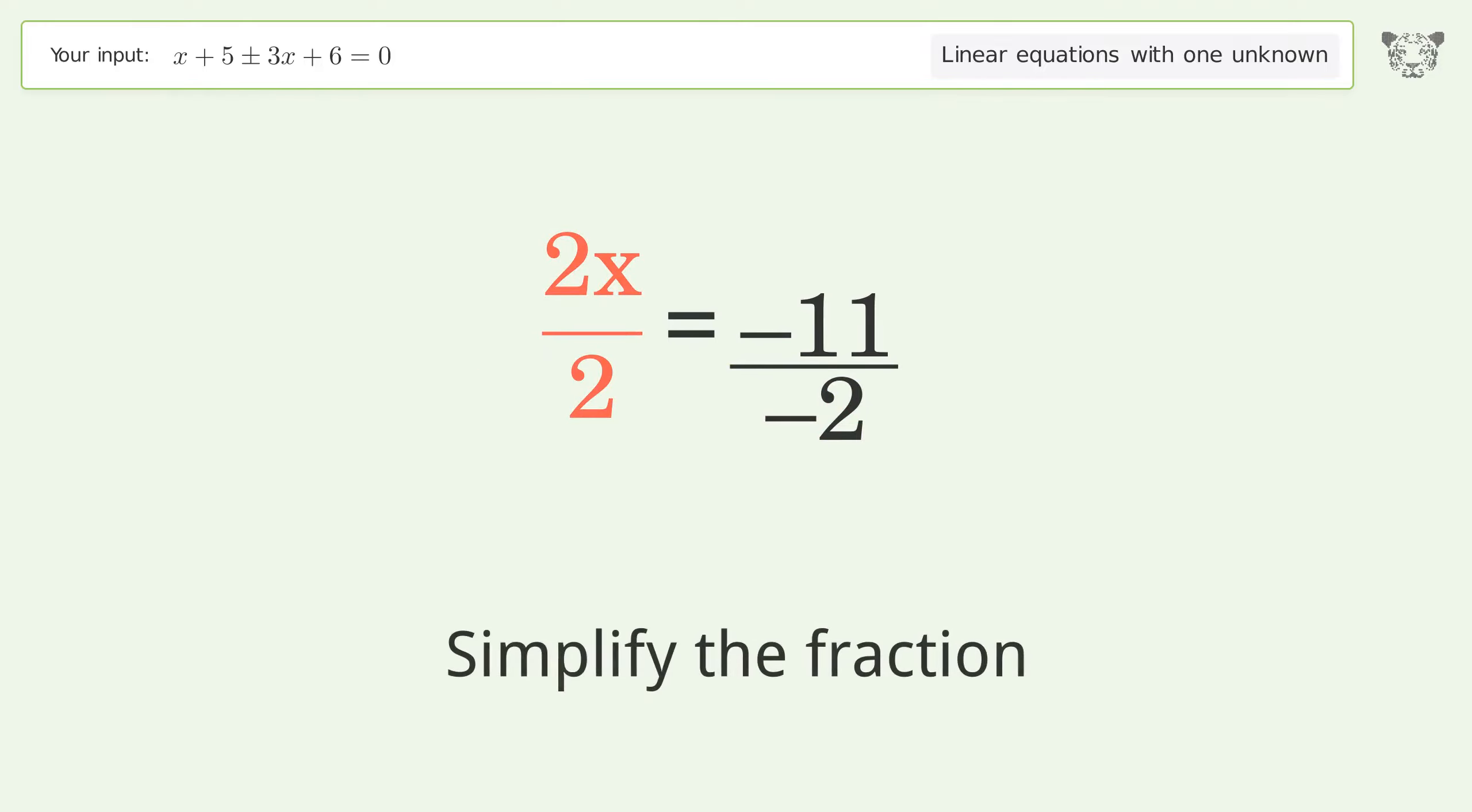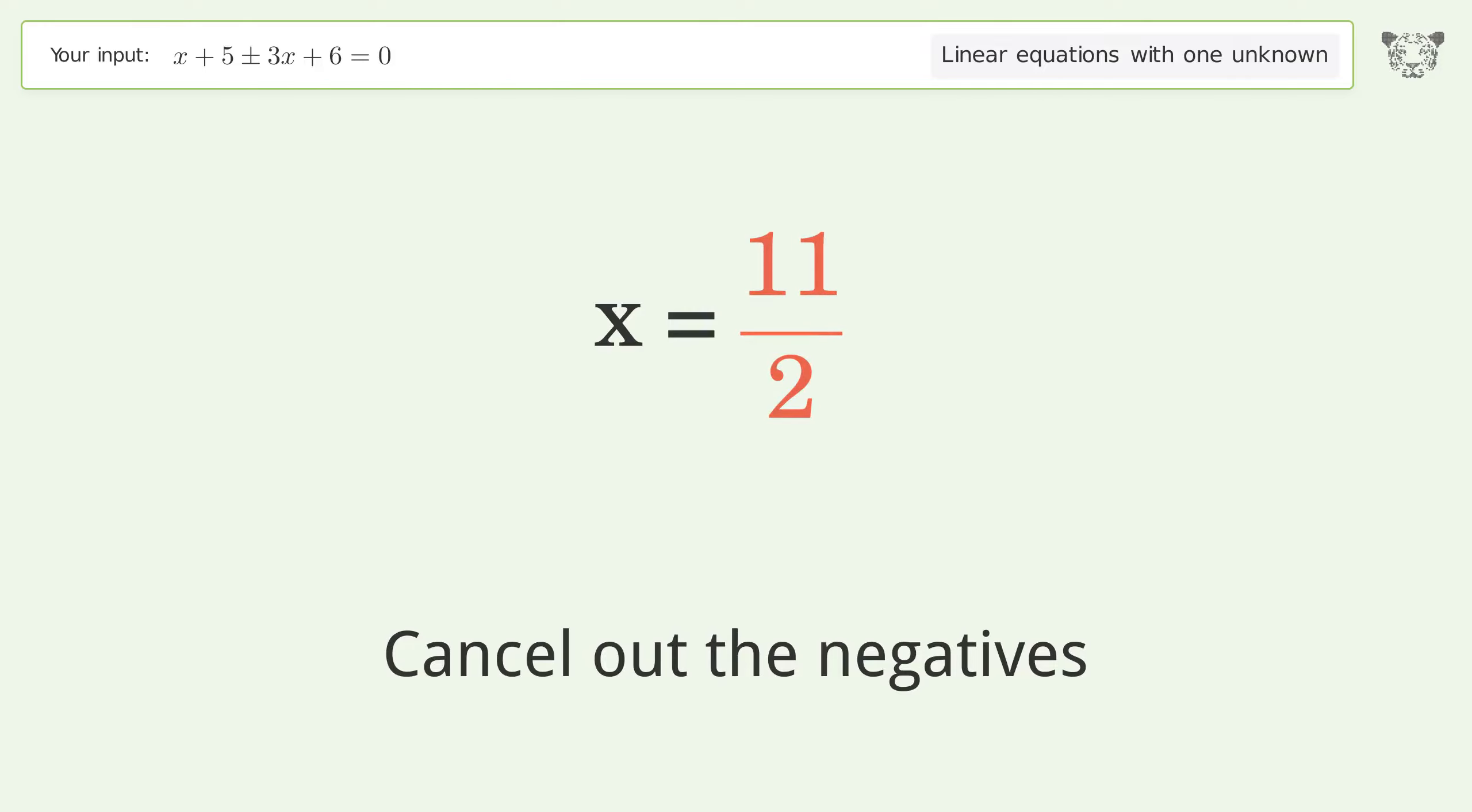Simplify the fraction. Cancel out the negatives. And so the final result is x equals 11 over 2.